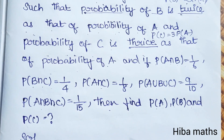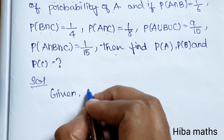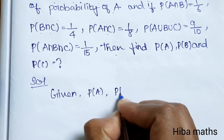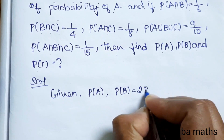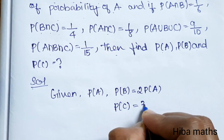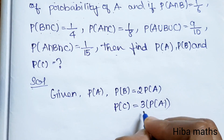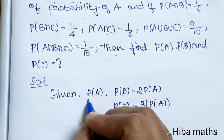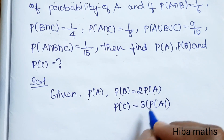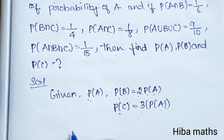From the given conditions, P(A) = P(A), P(B) = 2·P(A), and P(C) = 3·P(A). We will substitute these into the inclusion-exclusion formula.